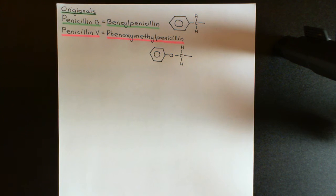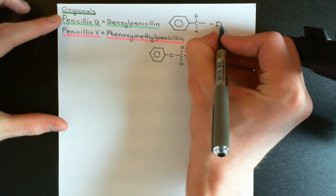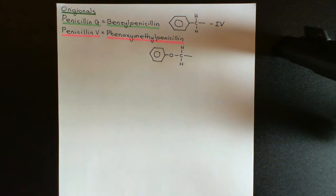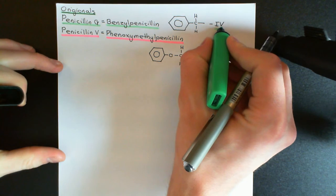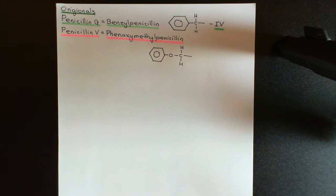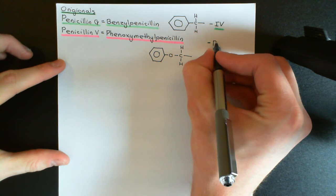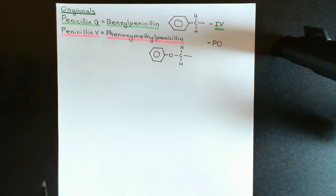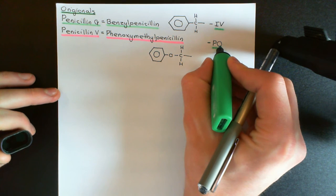Both drugs are still used. Penicillin G has to be given by intravenous injection because its oral bioavailability is very poor — only a small amount will pass from the gastrointestinal tract into the bloodstream if taken orally. Penicillin V, meanwhile, can be given orally (per os — Latin for 'by mouth'), as it has better bioavailability than Penicillin G.